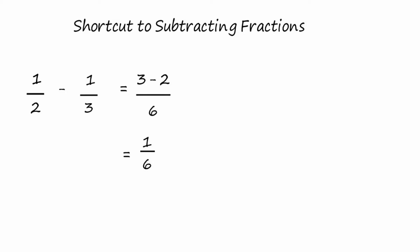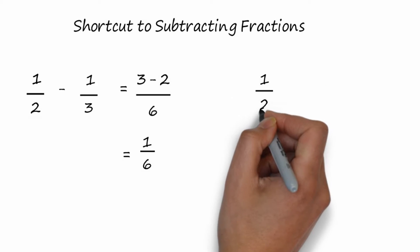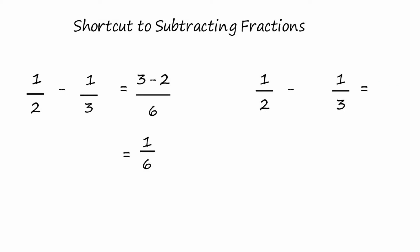I'm going to show you now what it looks like if we did find the lowest common denominator, so you can see why the shortcut method works. We'll take the same example, one-half minus one-third. We're going to find the lowest common denominator, which is six.